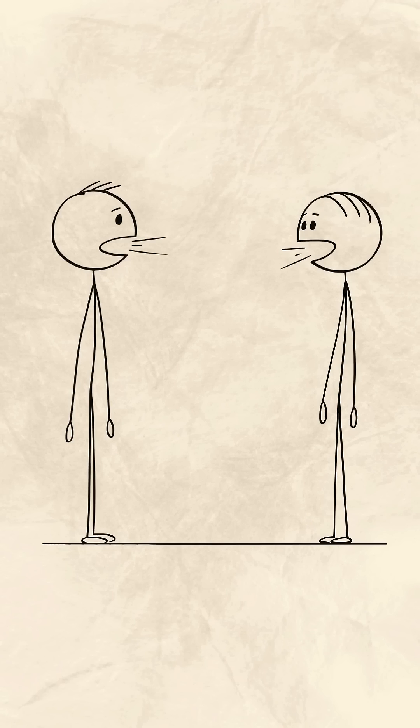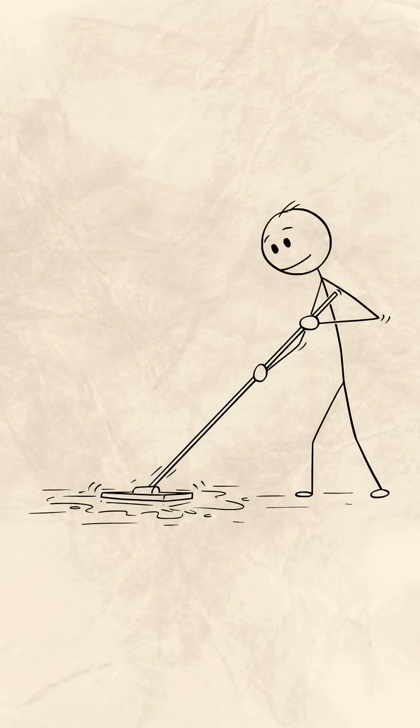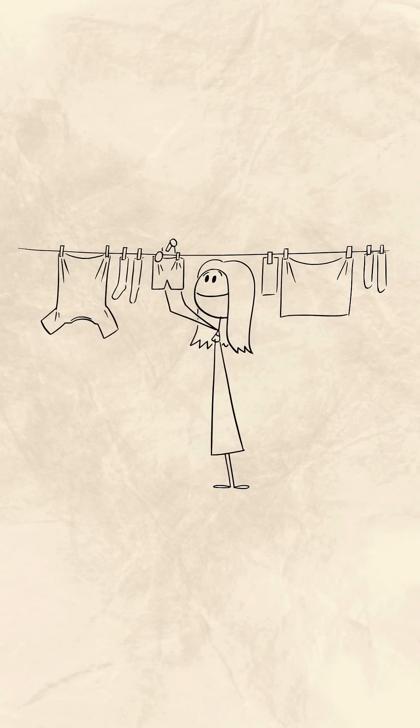It usually began with a sentence every 70s kid remembers clearly: go find something to do. Boredom wasn't entertained. If you complained about it, you quickly found yourself cleaning, folding laundry, or doing chores. So you learned fast. You learned to solve your own boredom.